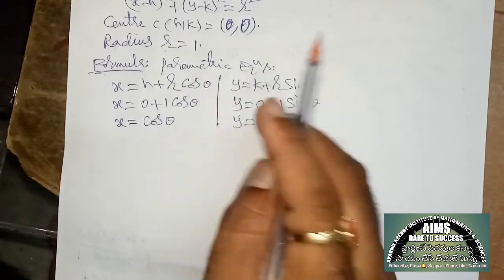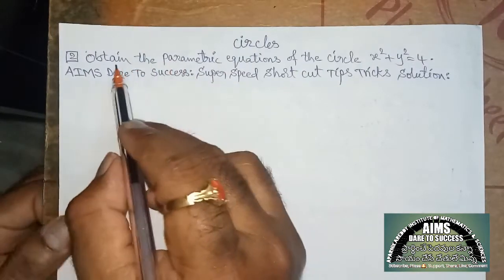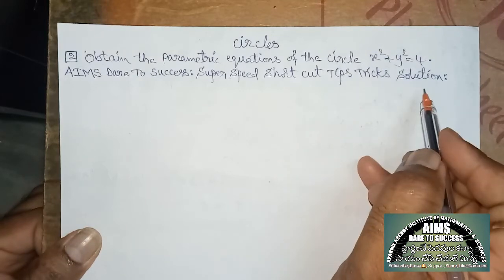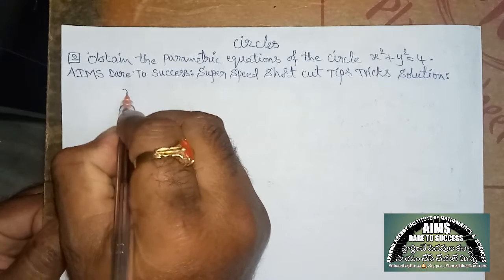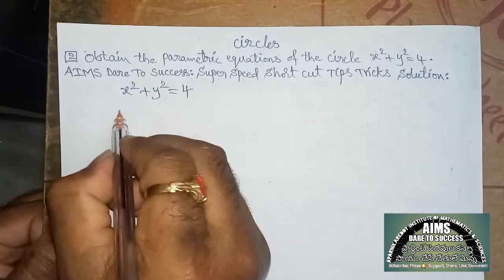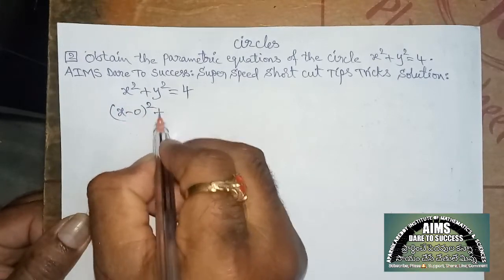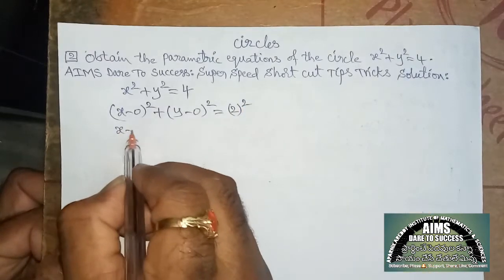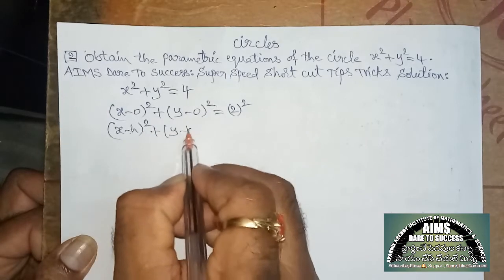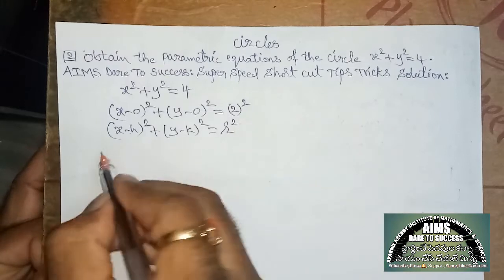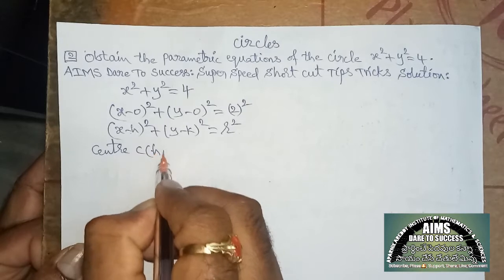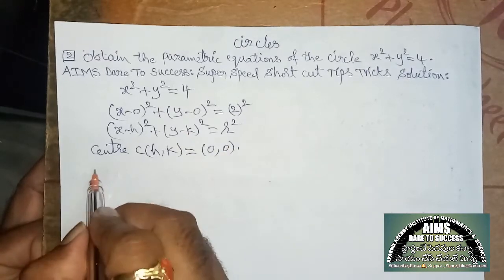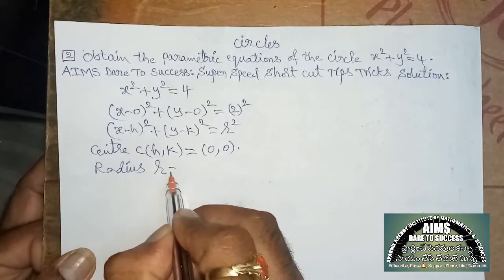One more similar question: obtain the parametric equations of the circle x² + y² = 4. Super speed shortcut tips and tricks — solution within 10 seconds — especially made for you. The given equation is x² + y² = 4, which can be written as (x − 0)² + (y − 0)² = 2². Comparing with the standard formula, we get center C(h, k) where h = 0 and k = 0.